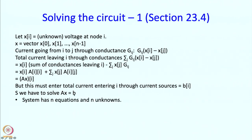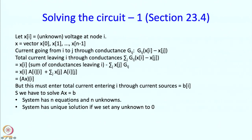There is a slight hitch: this system has n equations and n unknowns, where n is the number of nodes. Unfortunately these equations are not independent. But we will get a solution if we set any one unknown to 0.